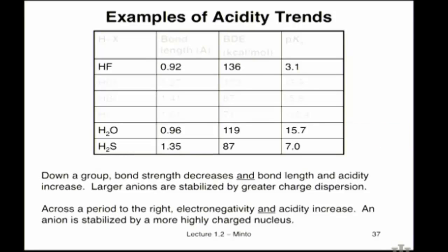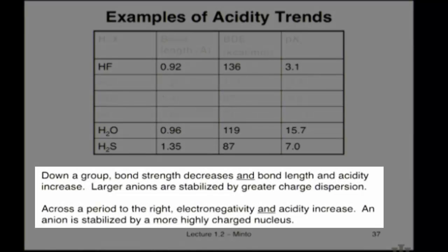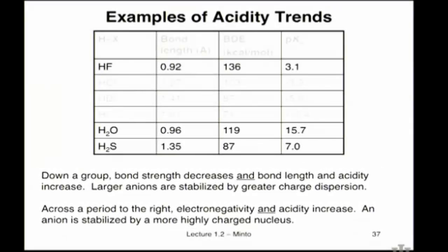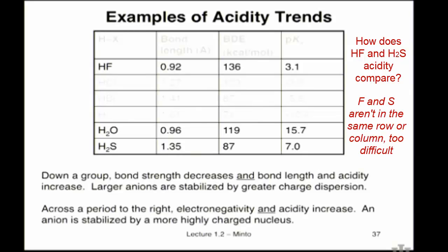One final point about these trends: you have a couple of competing trends going on. You might want to consider a comparison between something like HF and H2S, where fluorine is in one group and H2S is in the next group over and one period down. You can't really make comparisons in that situation where you move diagonally around the periodic table — it's too hard to separate the different effects.